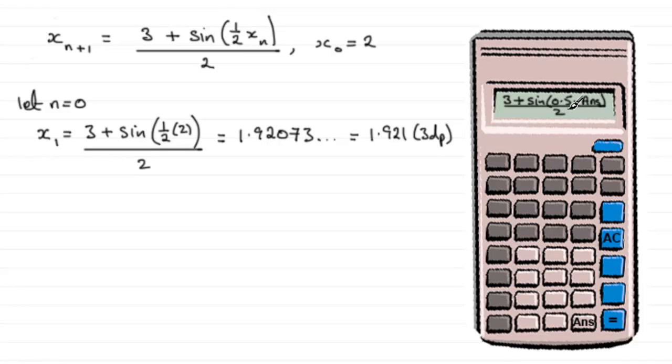Now once you've done that, if you just press equals, you should find you get this answer here: 1.92073. So when you press equals, up on the screen will come that answer, 1.92073, and there'll be other digits there as well.